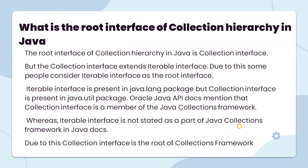What is the root interface of the collection hierarchy in Java? The root interface of the collection hierarchy in Java is the Collection interface. But the Collection interface extends the Iterable interface. Due to this, we can see the Iterable interface as the root interface. The Iterable interface is present in the java.lang package, but the Collection interface is present in the java.util package.